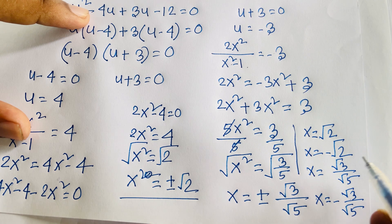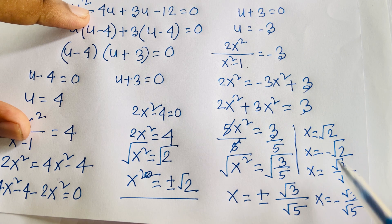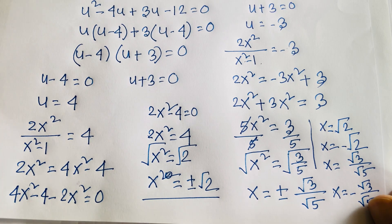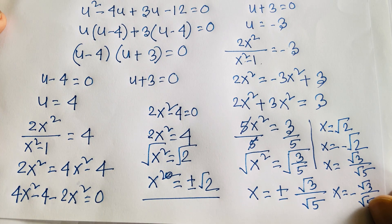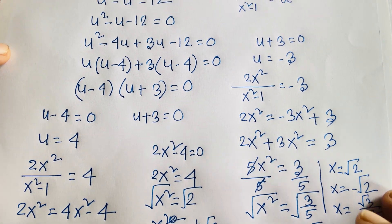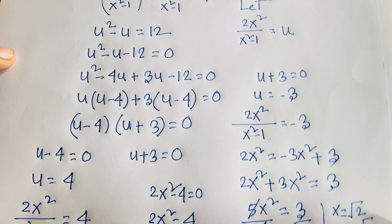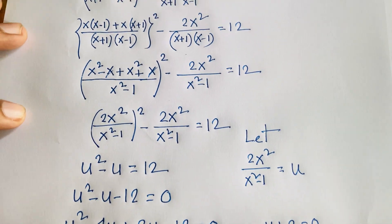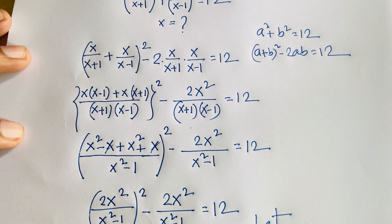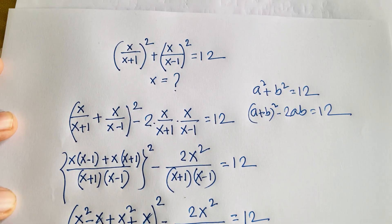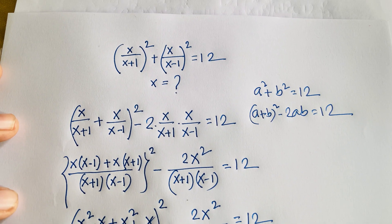So our final answers are four values: x = √2, x = -√2, x = √(3/5), and x = -√(3/5). Thank you all — if you enjoyed this video, please subscribe to my channel for other interesting videos. This is an interesting Carolian Math Olympiad question. Goodbye, take care!